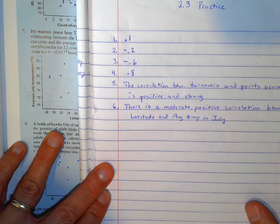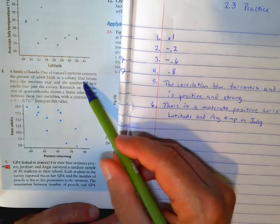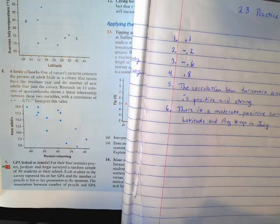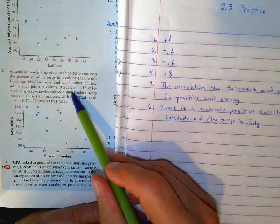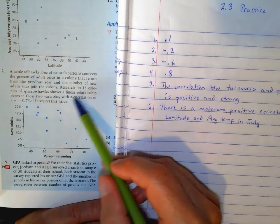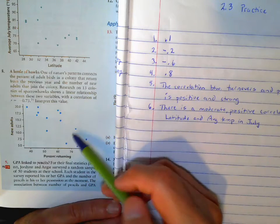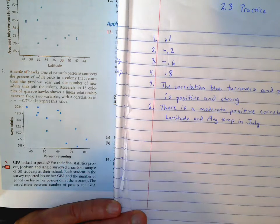The next one is the one right after this. Nature's patterns connects the percent of adult birds in a colony that return from a previous year and the number of new adults that join the colony. So this is the 13 colonies of sparrowhawks. And they record a linear relationship here at negative 0.75.